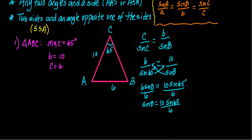And on this side, you'll end up with sine of B equals 10 sine of 65 divided by 6. And with your calculator, in degree mode, when you calculate this, you get that the sine of angle B is equal to 1.511.